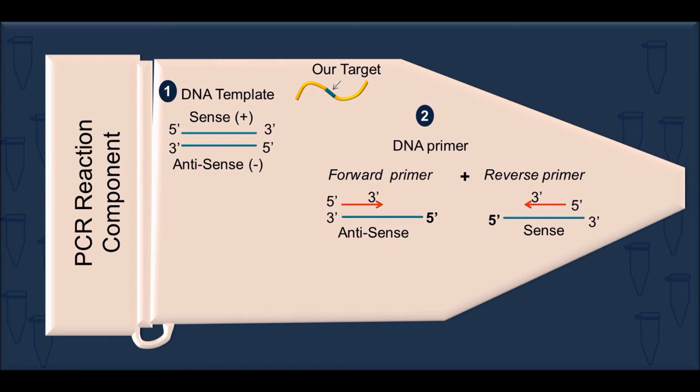Number two is the DNA primer, one that is complementary to our target sequence in the DNA template. The primer that anneals to the DNA anti-sense strand is considered a forward primer, while the primer that anneals to the DNA sense strand is considered a reverse primer.